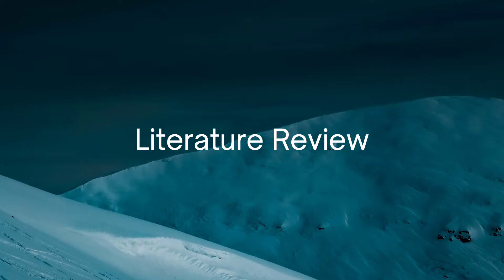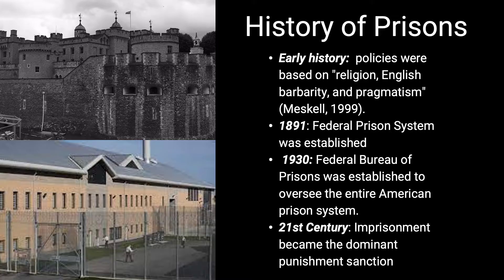Now that we have gone over the terms, I'd like to get into the literature review and more background evidence. Starting with the history of prisons: prisons and punishment have been an integral part of society for many centuries to hold offenders accountable for their crimes. In the 1700s, criminal law and offenders were left to self-policing based on religion, English barbarity, and pragmatism. During this time, there was a much bigger focus on physical punishment and intense labor, which meant there wasn't much need for prisons. But after years of those methods proving not to deter crime, the idea of incarceration arose.